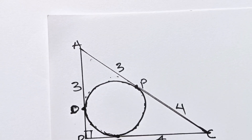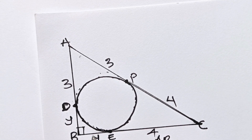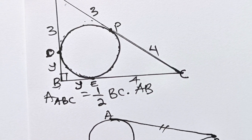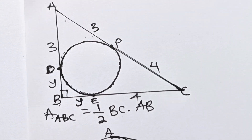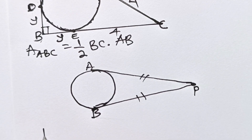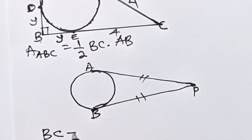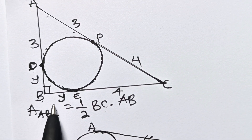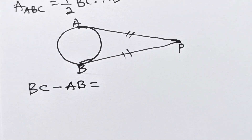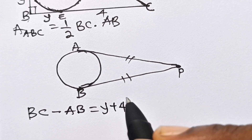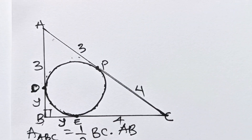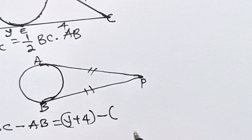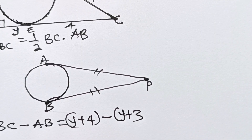DB and BE are tangent to this circle at points D and E, and they meet at point B. So it simply means that DB is equal to BE. If we call this length Y, and this length Y as well, because they should have equal length. Now, BC minus AB: our BC is Y plus 4, and AB is Y plus 3.